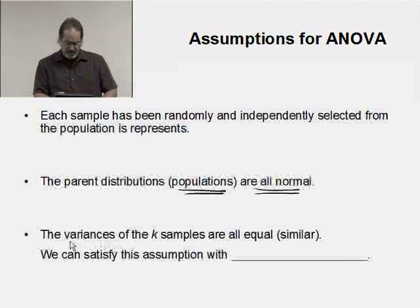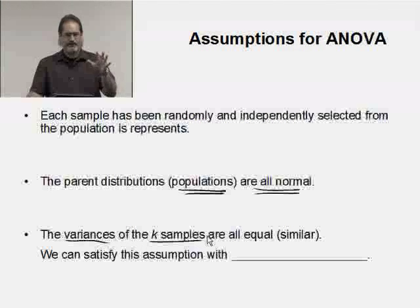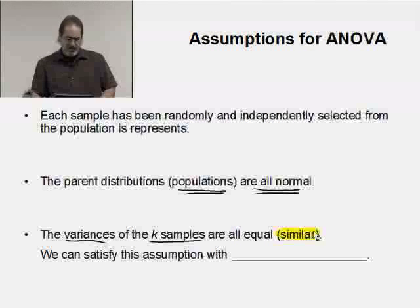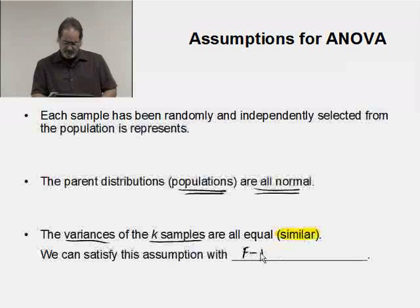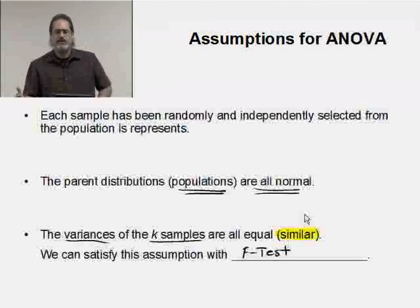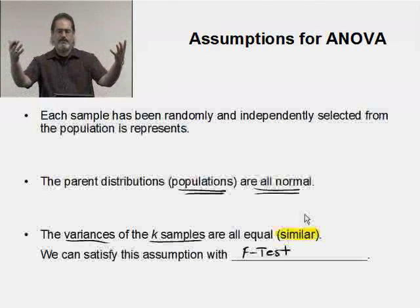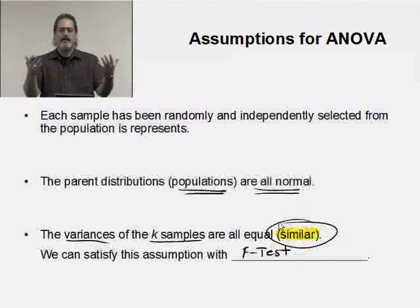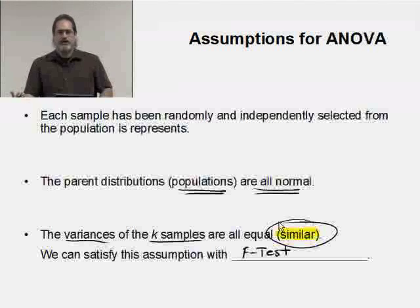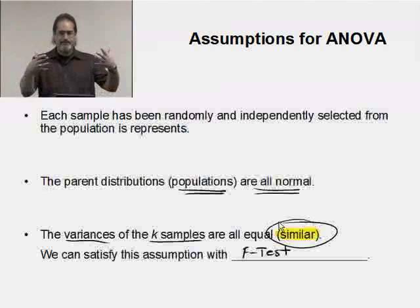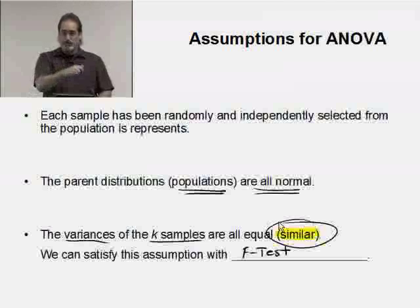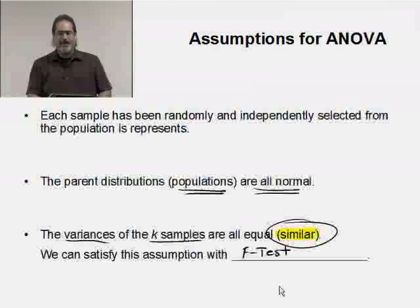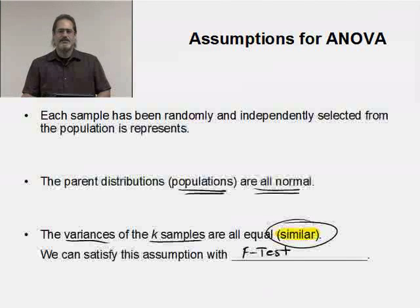An additional assumption is that the variances of the k samples, maybe I have three samples so k equals three, five samples k equals five, the variances are all equal. Actually, we're not worried about them being equal, just similar, whether the variances are actually similar. We can satisfy this with an F-test. When you work with a two-sample t, you did an F-test to decide if the variances were similar. If they're similar, you pooled. The ANOVA pools. Part of the actual calculations for analysis of variance is based on a pooled variance. So we need to pool. In order to properly pool, we need similar variances. So we can do an F-test to make the determination in terms of whether or not we are reasonably satisfied the variances are similar.